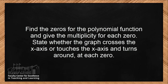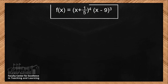So let's look at our problem. Find the zeros for the polynomial function and give the multiplicity for each zero. After we find the multiplicity and the zeros, we will state whether the graph crosses the x-axis or touches the x-axis and turns around at each of the zeros. Our function is f of x equals x plus one-fifth to the power of 4 times x minus 9 to the power of 3.